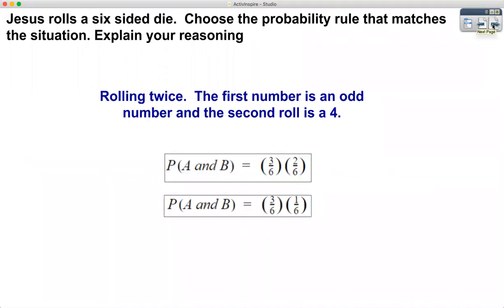Jesus rolls a six-sided die. We're going to be choosing the probability rule that matches the situation. Here is the first situation: Jesus rolls a six-sided die twice. The first number is an odd number and the second roll is a four. We need to figure out, of these two choices, choice one and choice two, which one represents that situation — the probability such that the first number is an odd number and the second roll is a four.